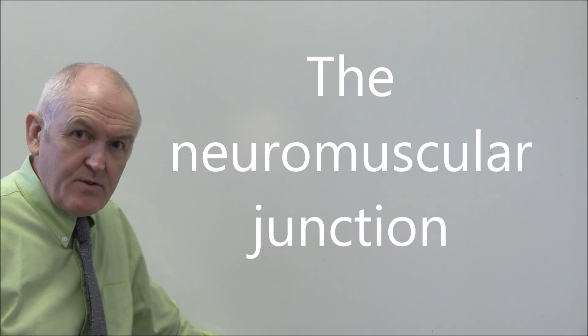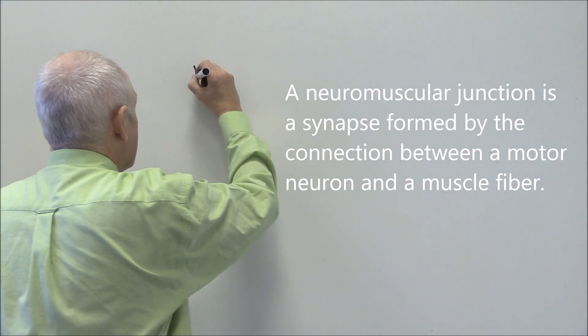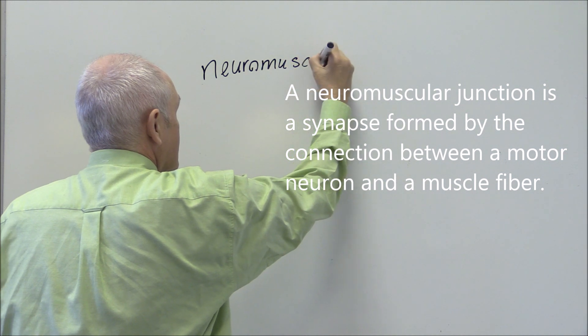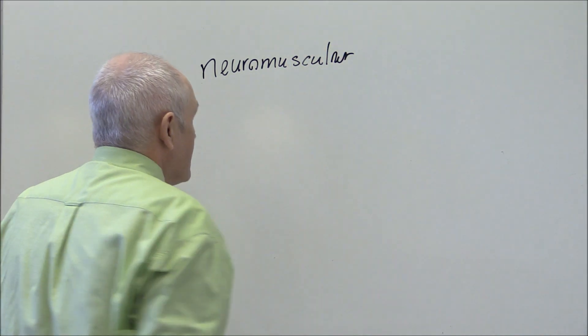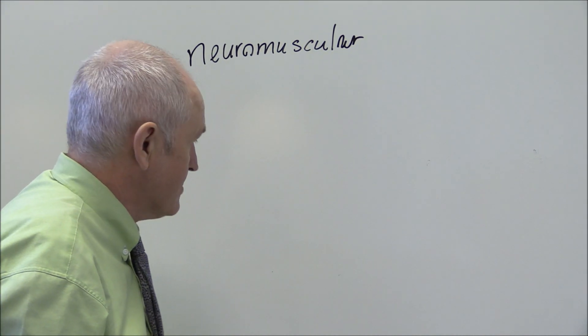So we've looked at synapses between individual nerve cells and because it's very important I want to look in a little bit more detail at the neuromuscular junction. The junction between the nerve and the muscle.